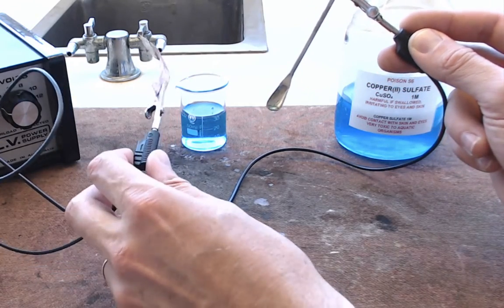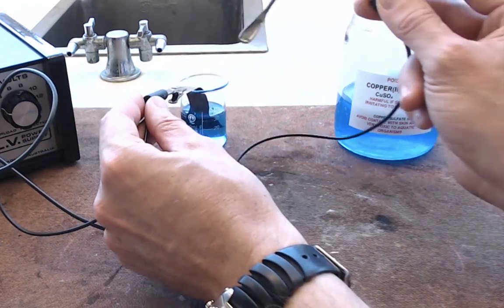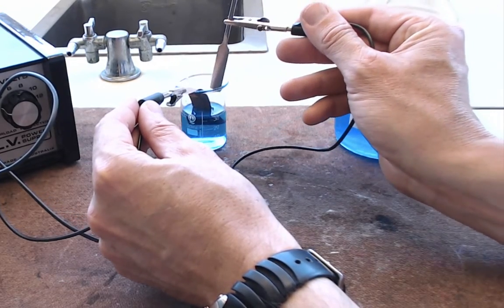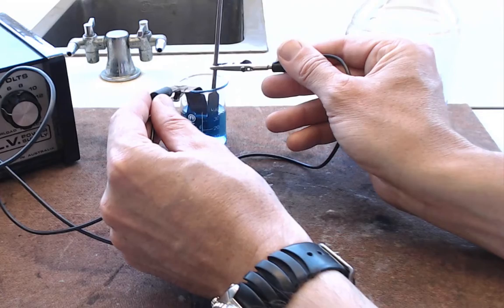Then we're going to do a very similar thing. We're going to put our electrodes in the solution again. You might want a clean part of the metal that you haven't plated yet, so you might want to turn it round.